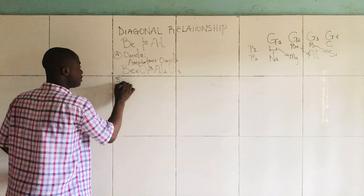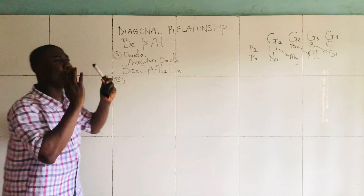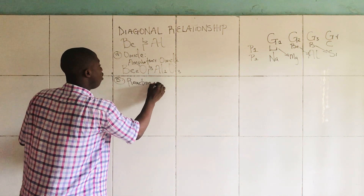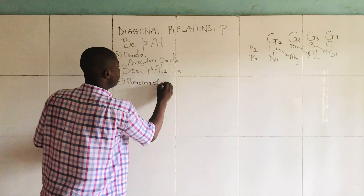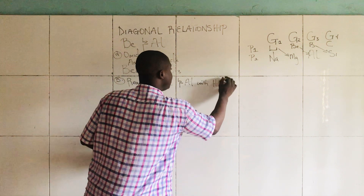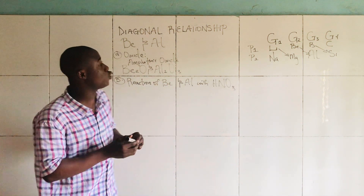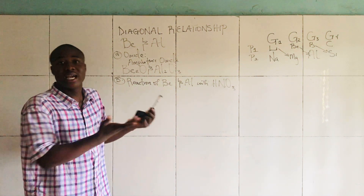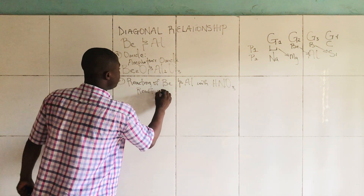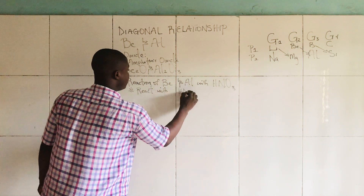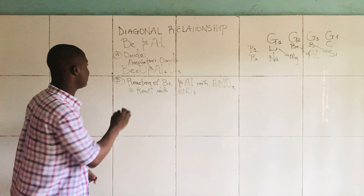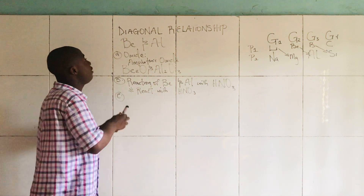Now talking about the second concept of the diagonal relationship of Beryllium and Aluminium. It brings to mind the reaction of Beryllium and Aluminium with HNO₃, which is called hydrogen trioxonitrate(V) acid, popularly called nitric acid. These elements react with HNO₃, unlike other elements of their group members which do not react.